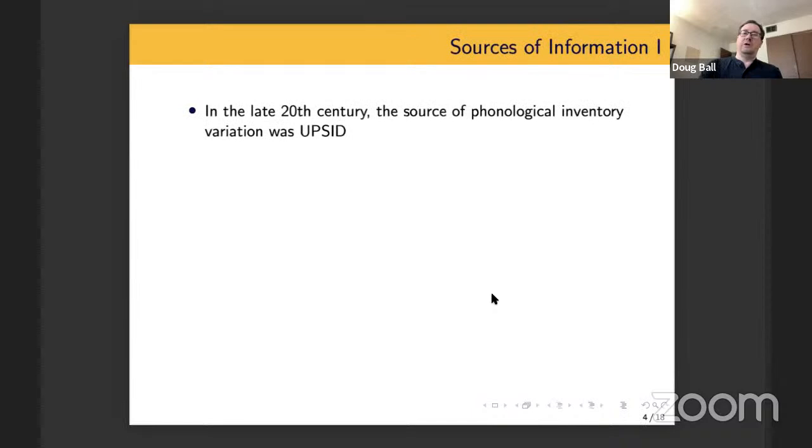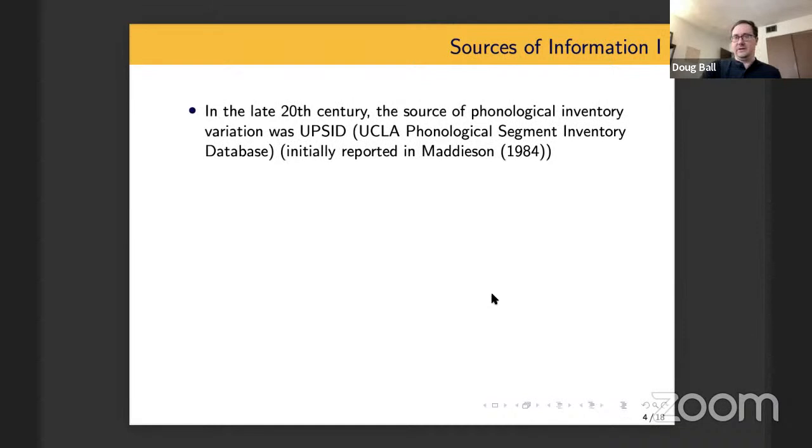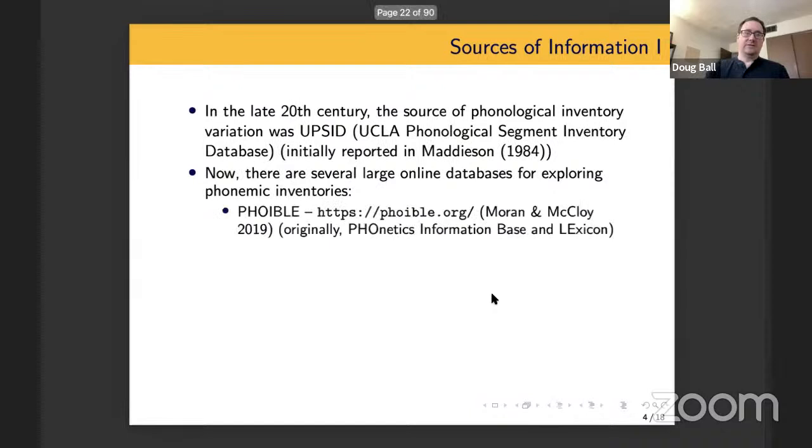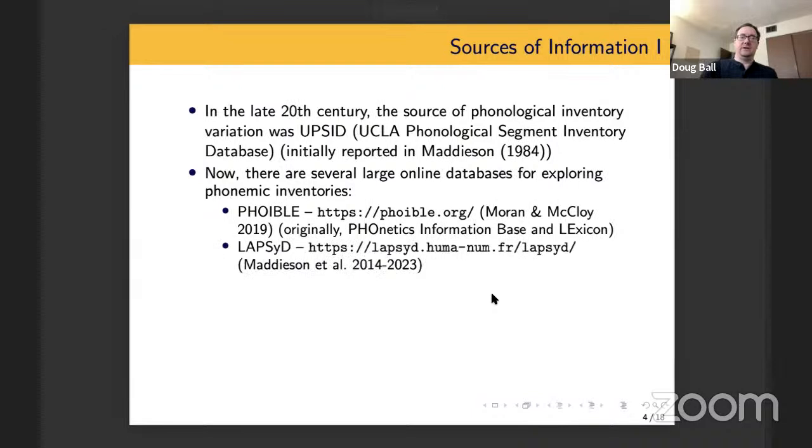So when I first started conlanging, the go-to source for looking at phonological inventories across the world was something called UPSID, which was short for the UCLA Phonological Segment Inventory Database. But in the 21st century, there are now several large online databases that you can use to explore this sort of thing from the comfort of your own home and on your own computer. So there's something called FOIBLE, which also originally had an acronym attached to it. There's also something called LAPSID, which also is more or less an acronym. This stands for the Leon Albuquerque Phonological Systems Database.